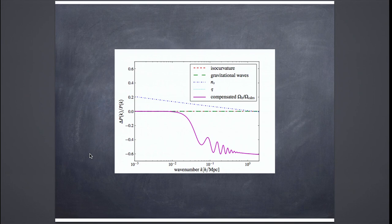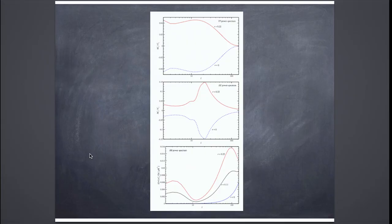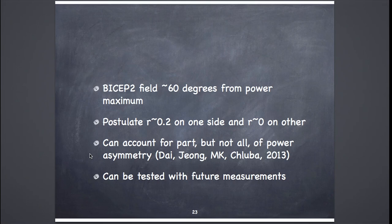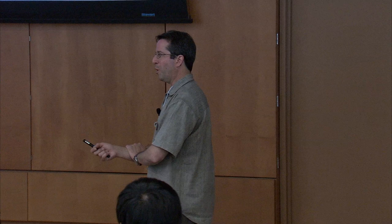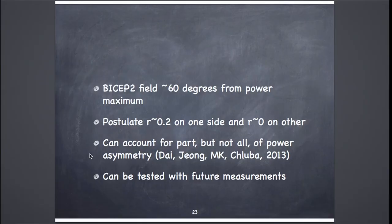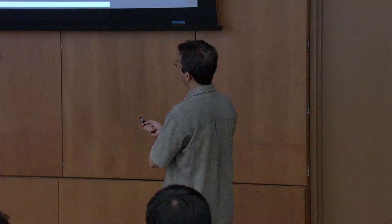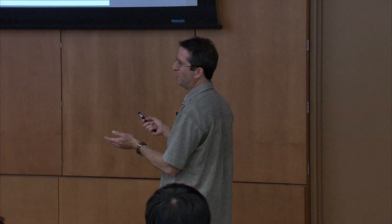When BICEP2 came out two months ago, this inspired an investigation of whether a gravitational wave power asymmetry could account for the BICEP2 results. The BICEP2 field is about 60 degrees from the power maximum. If I postulate R of about 0.2 on one side of the universe and R of about 0 on the other, I can explain the BICEP2 amplitude of R close to 0.16. It can account for part, but not all, of the power asymmetry. If this is right, Planck should find R of about 0.1, but a measurement on a small patch on the other side of the sky should find R close to 0.